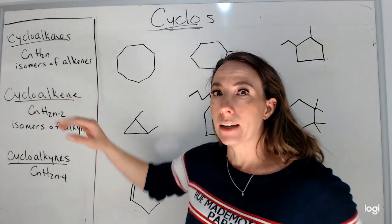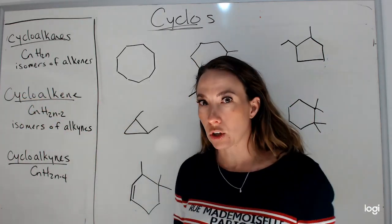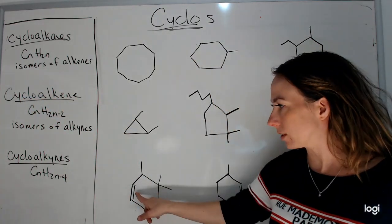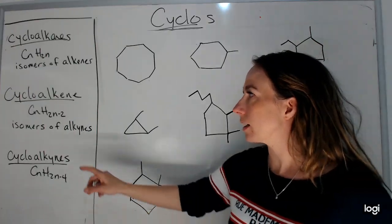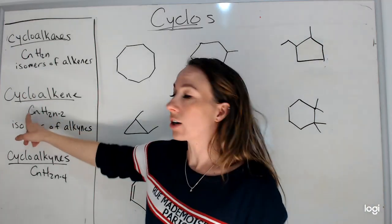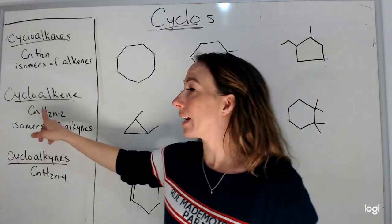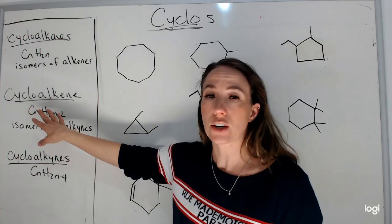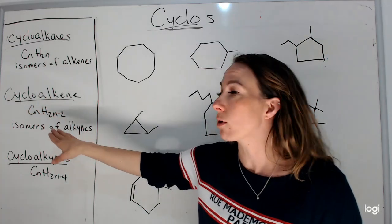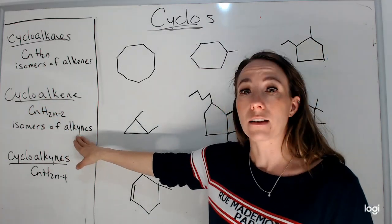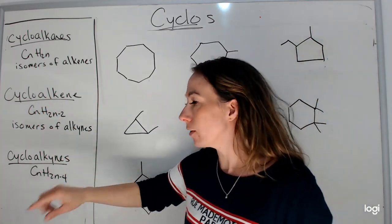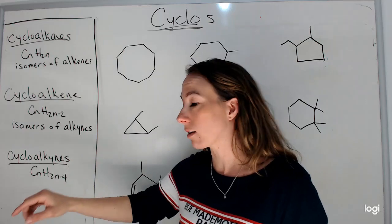A cycloalkene is a circle with a double bond in it. Its general formula is CnH2n-2, and you've seen that general formula before in the straight-chain alkynes.